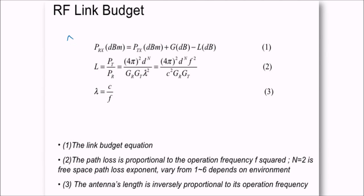This is RF link budget. The first equation is the link budget equation - gain plus send power minus all the losses. This one is the path loss which is proportional to the operational frequency F squared. So loss is directly proportional to the square of frequency. N equals 2, the free space path loss exponent - it varies from 1 to 6, it depends on the environment. The antenna length is inversely proportional to d to the power n. The antenna length is inversely proportional to the frequency - these are inversely proportional to the frequency. So frequency is inversely proportional to the antenna length or the area.